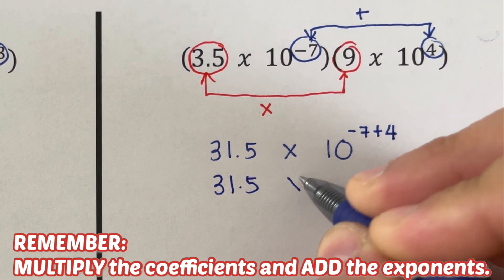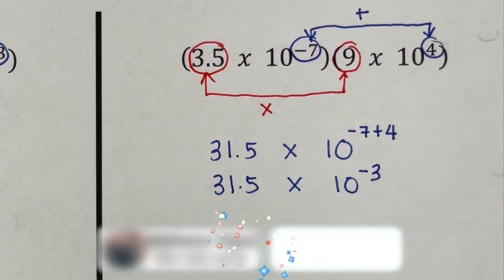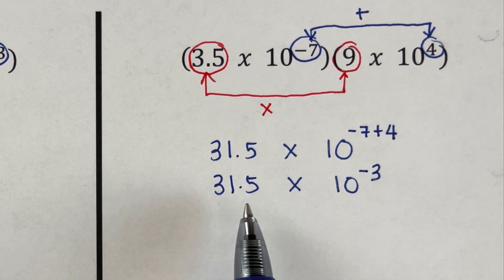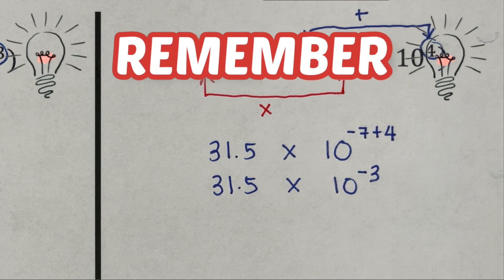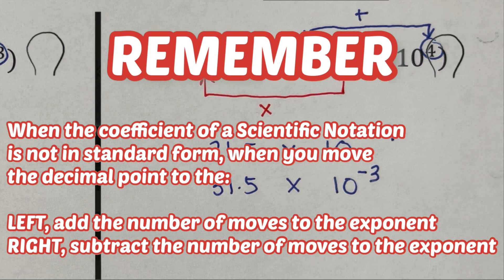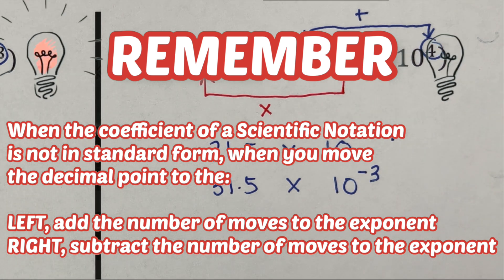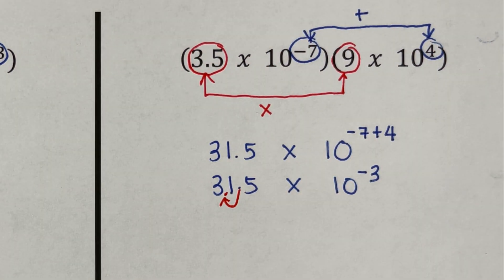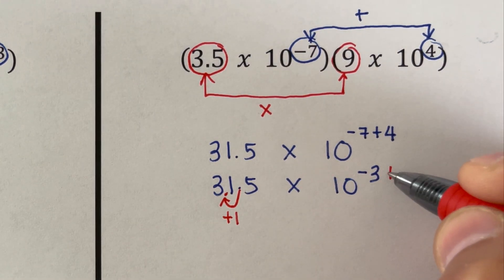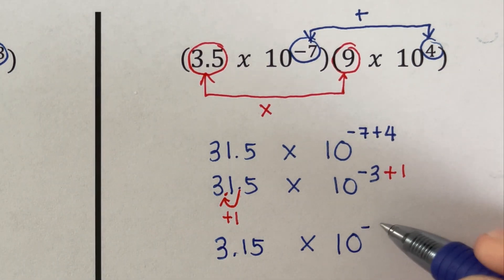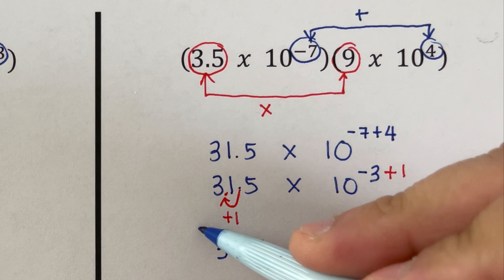That gives us 31.5 times 10 to the negative 3. Notice the coefficient is not in standard form since it is not between 1 and 9.9999. We move the decimal point one place to the left to make it 3.15 — which is between 1 and 9.999. Since we moved to the left, we add 1 to the exponent: negative 3 plus 1 is negative 2. So the product is 3.15 times 10 to the power negative 2.